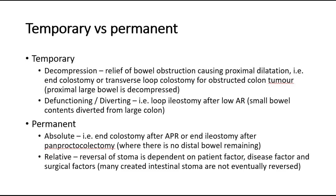Stomas can be temporary or permanent. Temporary stomas may be for decompression, such as relief of bowel obstruction causing proximal dilatation — for example, end colostomy or transverse loop colostomy for obstructed colon tumor, where the proximal large bowel is decompressed. Or for defunctioning or diverting, such as loop ileostomy after low anterior resection.